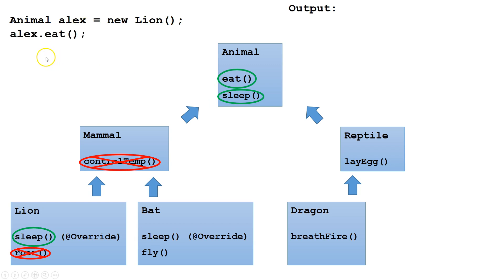Let's write some more code. Imagine we call alex and the eat method. In this case, it will call the method in the Animal class, which is inherited all the way down to the Lion class.